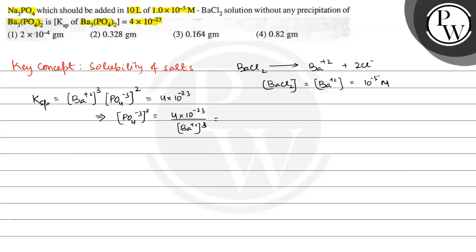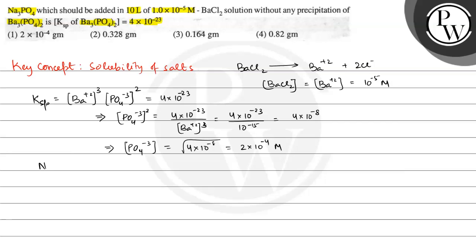The Ba²⁺ concentration is 10⁻⁵, so [Ba²⁺]³ = 10⁻¹⁵. Therefore [PO₄³⁻]² = 4×10⁻²³ ÷ 10⁻¹⁵ = 4×10⁻⁸. Taking the square root gives [PO₄³⁻] = 2×10⁻⁴ molar.